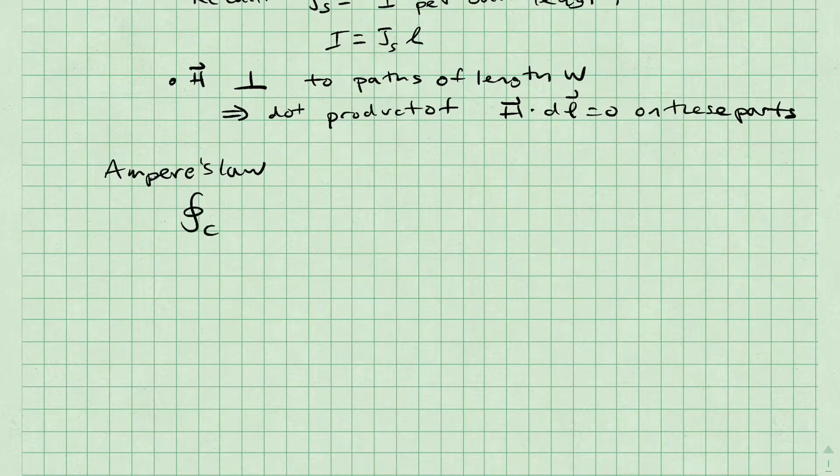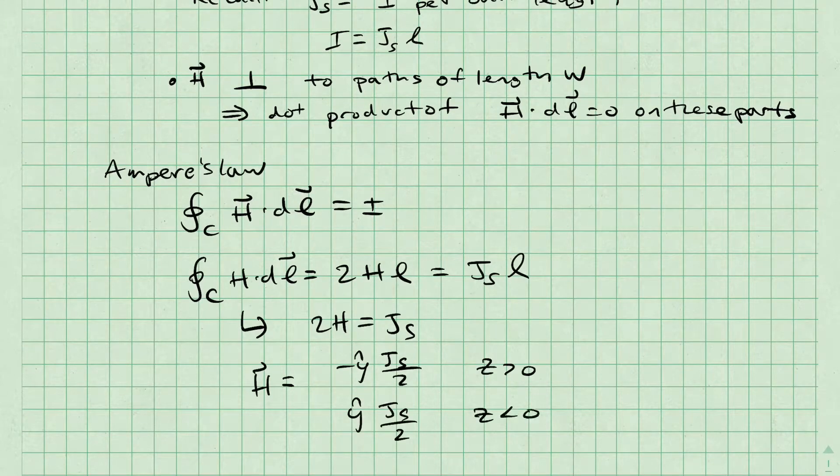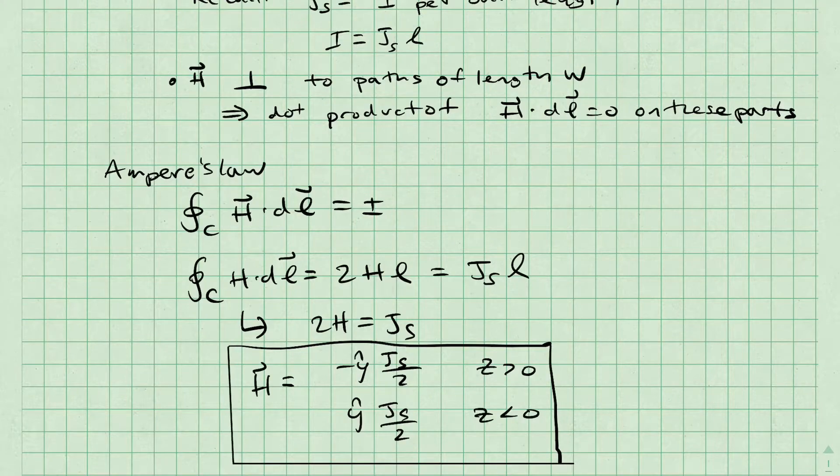Let's apply Ampere's law. The contour integral of H·dl is equal to I. Plugging in values, we find that this integral is 2Hl, and it is equal to Js times l. Simplifying, we get an expression for the magnetic field intensity H, which is negative y-hat Js over 2 for z greater than zero, and y-hat Js over 2 for z less than zero.